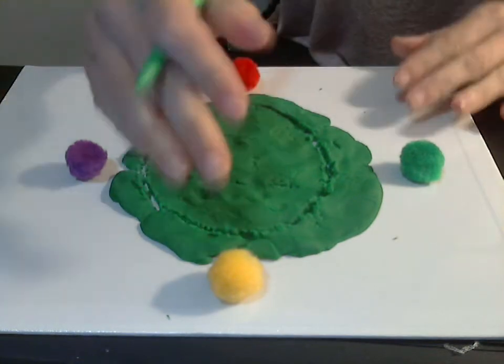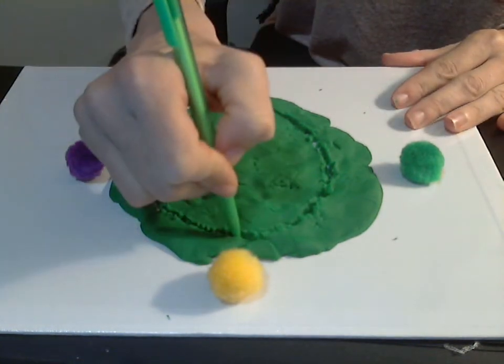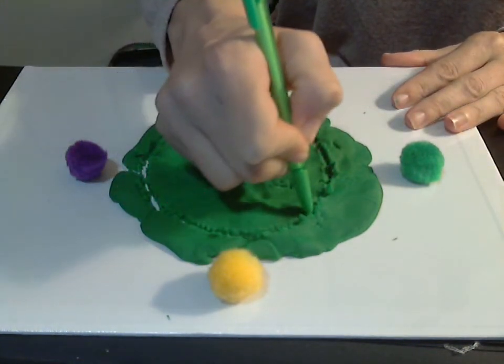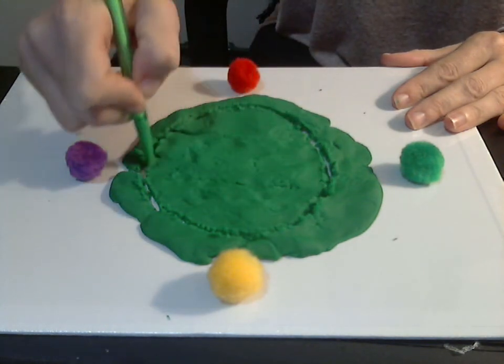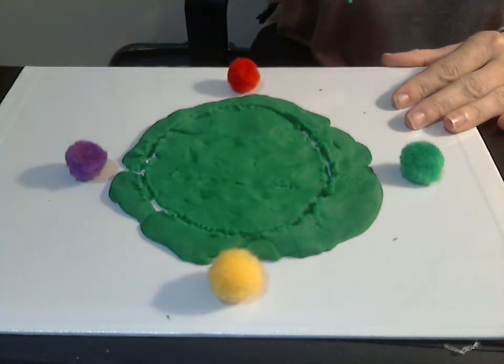And remember, when we're working on a circle, we always want them to start at the top and make the letter C. So they're going to be going counterclockwise, like that.